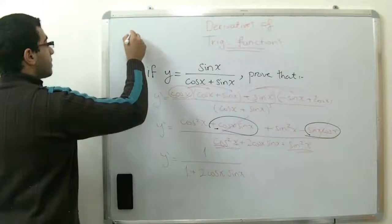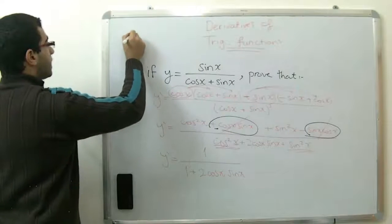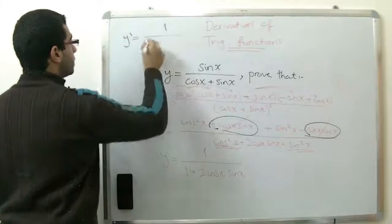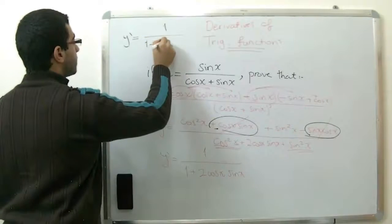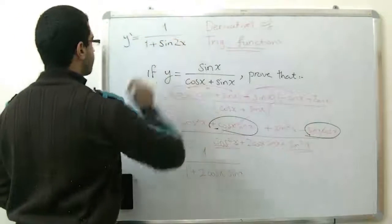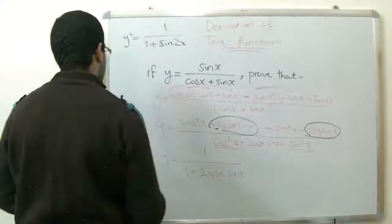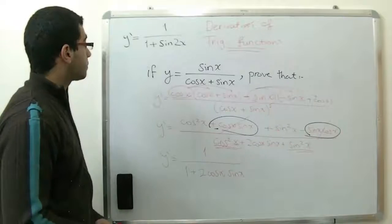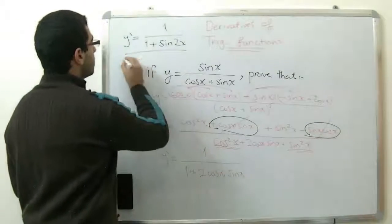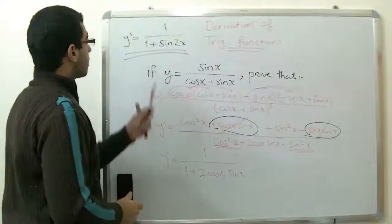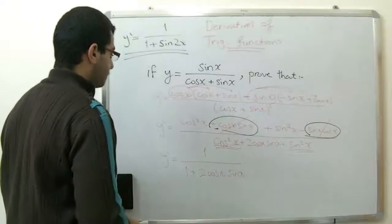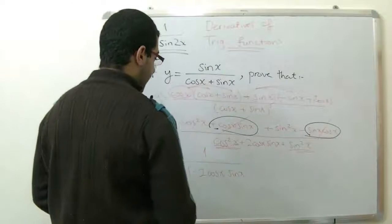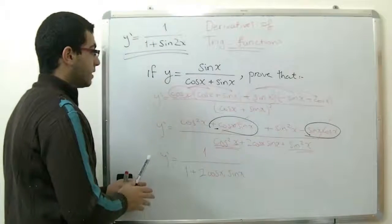And we wanted our expression in this form: y dash equals 1 over 1 plus sine 2x. Right, 1 plus sine 2x equals 1 plus 2 cosine x sine x, because this is a trigonometric rule.